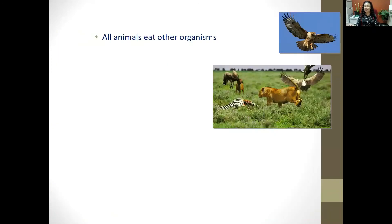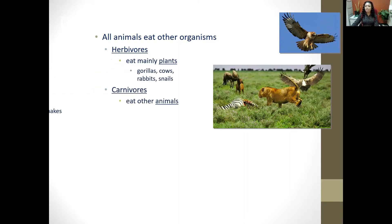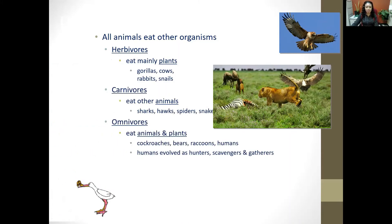All animals eat other organisms because animals are heterotrophs — they cannot make their own food. You have herbivores, which eat plants; carnivores, which eat other animals; and omnivores, which eat both plants and animals. Since animals cannot make their own food, they rely on other organisms — be it another animal or plants — to provide it.